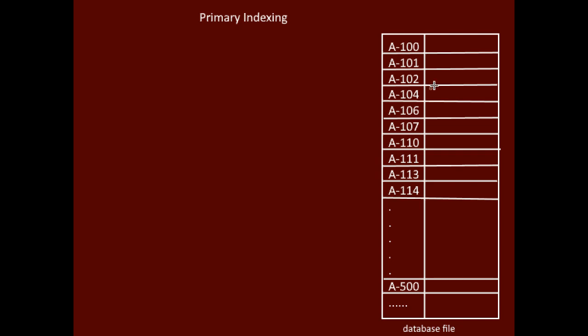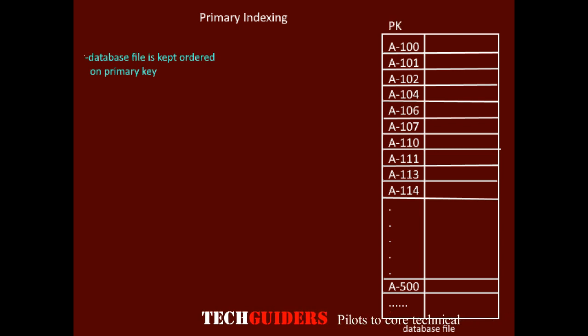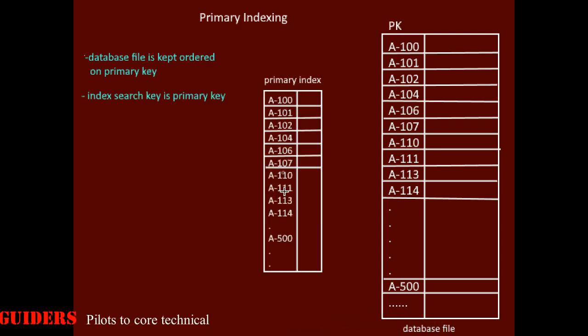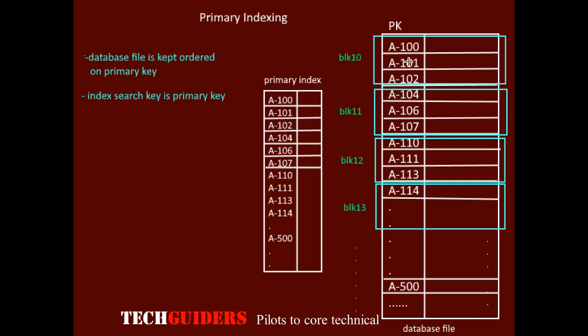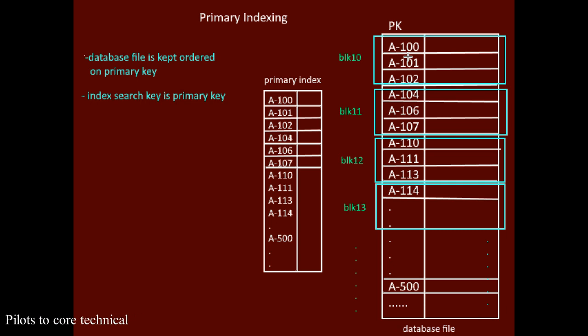In primary indexing, the database file is kept physically sorted or ordered based on the primary key. The index is created on the primary key. Contiguous disk blocks are allocated to this file, and the records are physically kept sorted based on the primary key, which acts as the index search key.